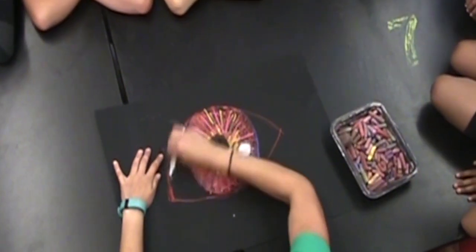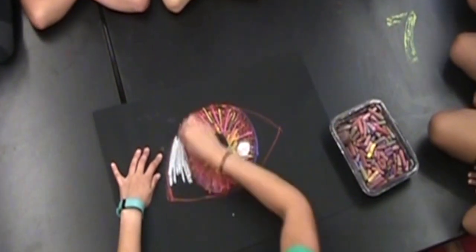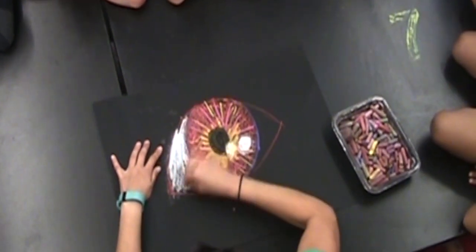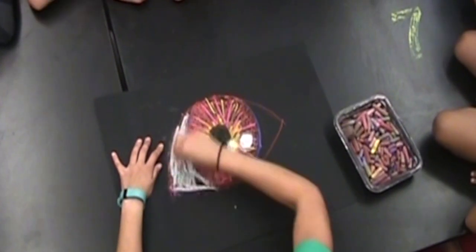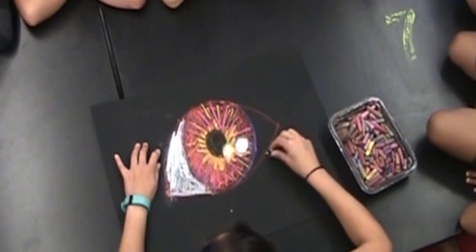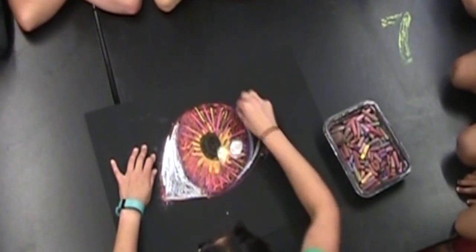Then I'm going to take that same white and again you can use any color that you like. I'm going to take white and color in around the iris of the eye, filling it in. But this is not the last step.